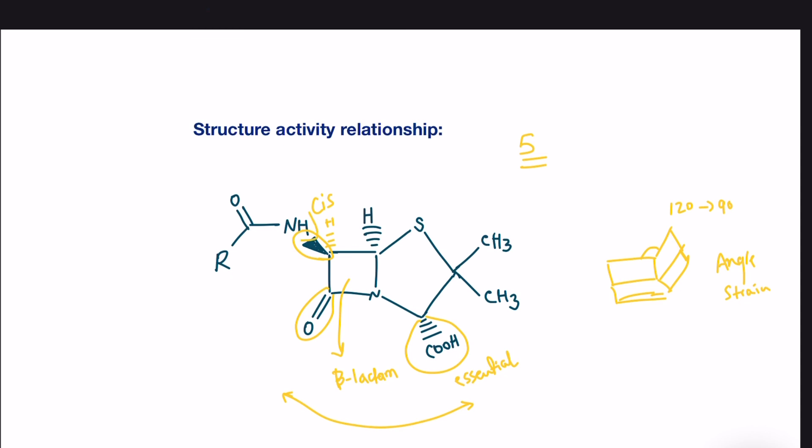Also, the amide structure here is essential as well. And the sulfur here is usually present, but it's not essential. It can vary, but very minimum variation is possible. The only thing that can vary a lot is the R side chain. Other than that, the five main things here must be present in each penicillin in order to behave like a penicillin.